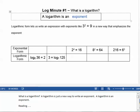Logarithmic form lets us write an expression with exponents, like 3 squared equals 9, in a new way that emphasizes the exponent.